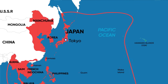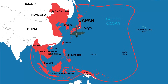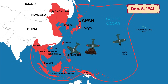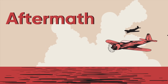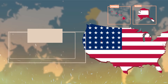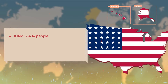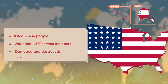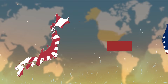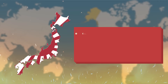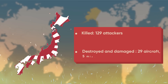The attack on Pearl Harbor was followed by Japanese airstrikes on US bases in the Philippines, Guam, and Wake Island on December 8th. The attack killed 2,404 US personnel, including 68 civilians, wounded more than 1,177 service members, and damaged or destroyed 19 US naval ships, including 8 battleships. Japanese losses included 29 aircraft, 5 midget submarines, and 129 attackers killed and 1 taken prisoner.